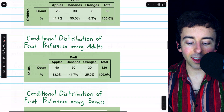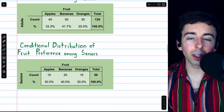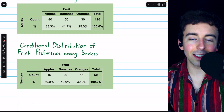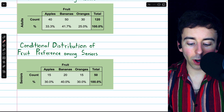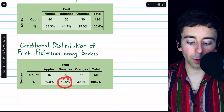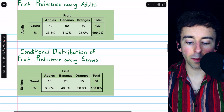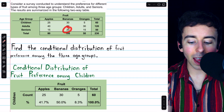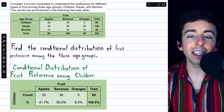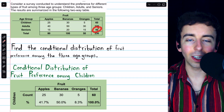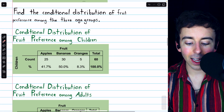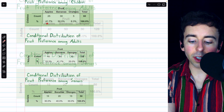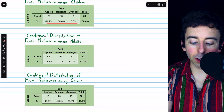Looking at the distribution for seniors, the total is all of the seniors. For example, 40% — the percent of seniors that preferred bananas — is found by taking 20 and dividing by the total number of seniors, which is 50. That, of course, is how we get 40%.